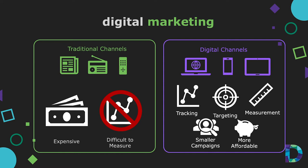So why would we consider digital marketing over traditional channels? There are lots of reasons why advertisers have migrated to digital. Traditional media channels such as TV, radio, and newsprint tend to be costly and take a mass marketing approach — essentially a one-size-fits-all strategy. They're also typically challenging to measure, making it difficult to determine campaign success.